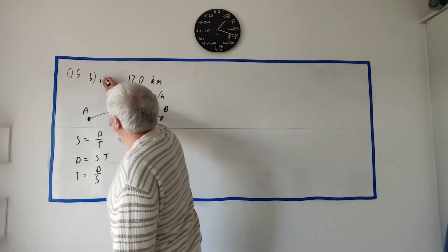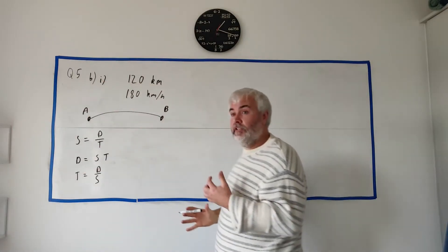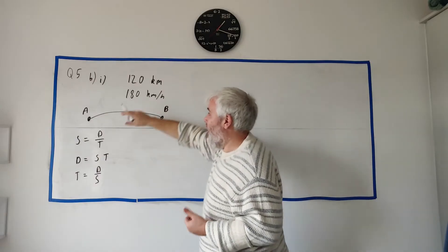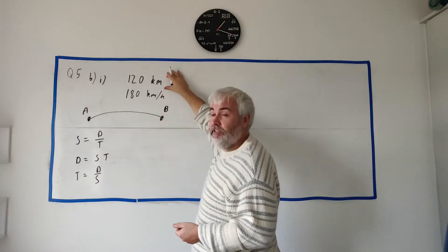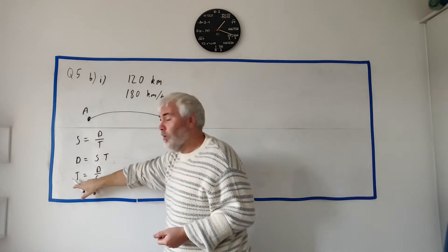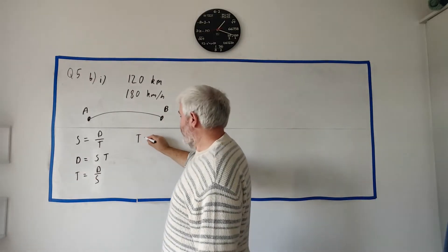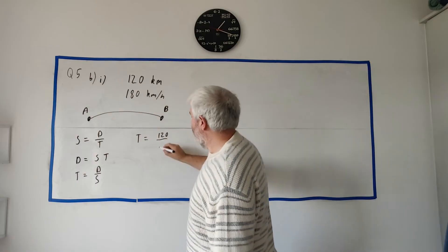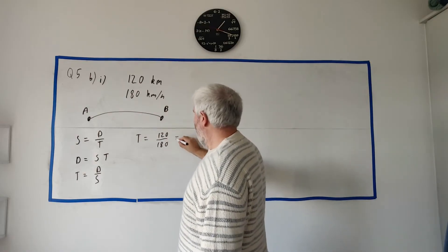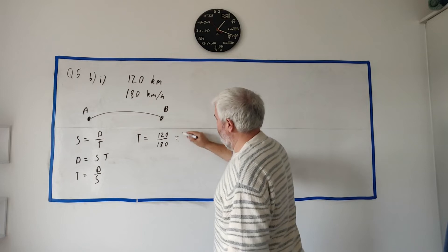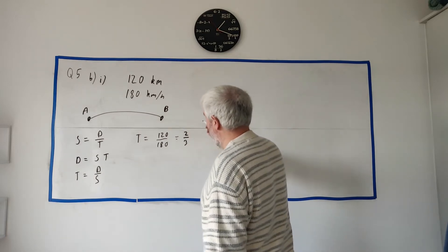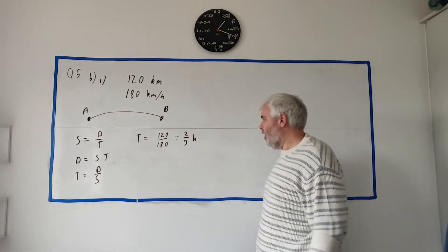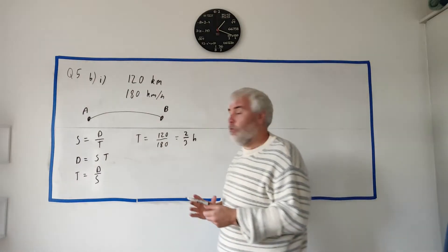For B part 1, they simply ask how long does it take to get from town A to town B? Here's your distance, here's your speed, what time? So T is equal to distance 120 divided by speed 180. You put that in the calculator or you can cancel it out yourself, which should get 2 over 3. And this is in hours. So that's your answer to part 1.